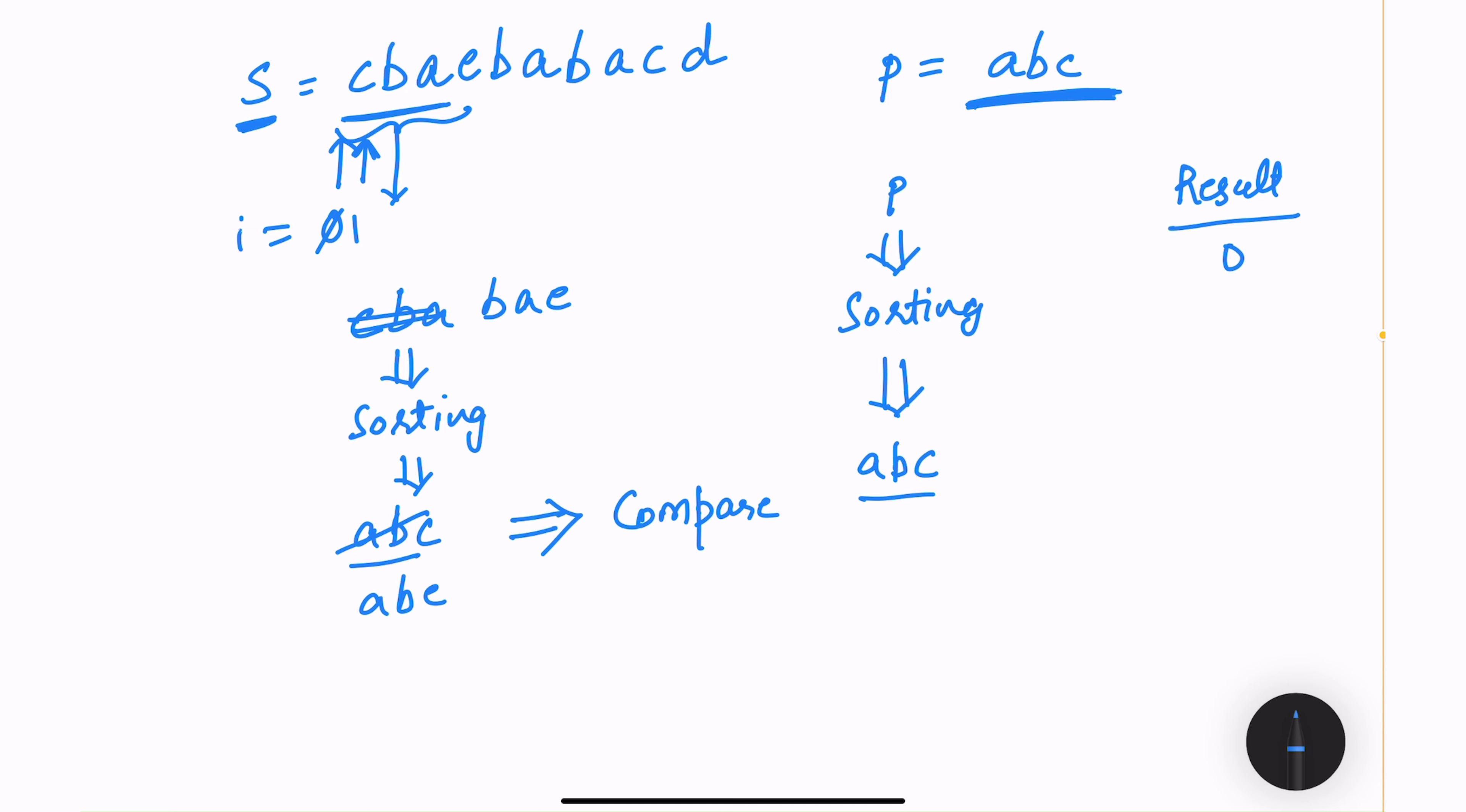And if I find the two strings are equal, add it to the result. Now with this solution, definitely our time complexity is going to be huge because we are ordering or sorting the string at each index, thus exponentially increasing our time complexity.